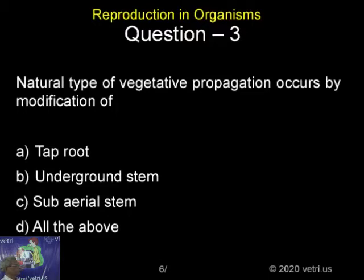Natural type of vegetative propagation occurs by the modification of taproot, underground stem, and subareal stem — this is natural type of vegetative multiplication.